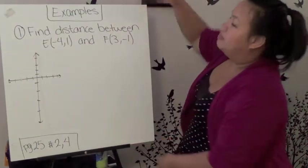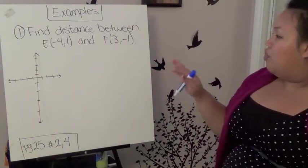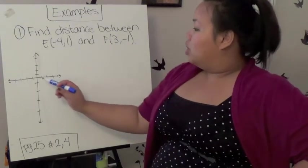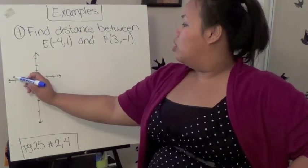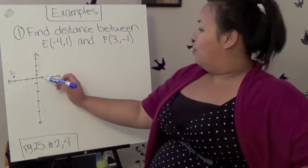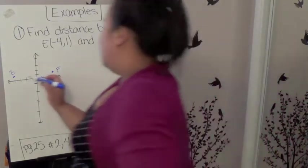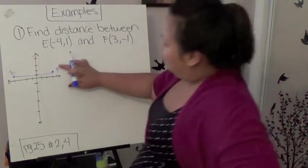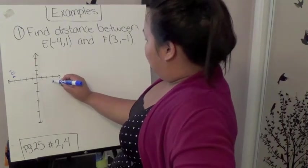Example number 1 is asking us to find the distance between E, negative 4, 1, and F, 3, negative 1. So here, let's find E, 1, 2, 3, 4, negative 4, and up 1. So this is our E, and then our next one is F, positive 3, up 1. So what I want to do is I want to find the distance between this. Oh, sorry, my apologies. It's negative 1. So it's 4, 3, down negative 1.